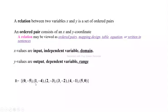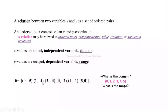Suppose R = {(0,−5),(1,−4),(2,−3),(3,−2),(4,−1),(5,0)}. Then R is a relation between these two sets. The first element is X and the second element is Y and it can be plotted on a graph. For this relation R, the domain is the set of first elements: {0, 1, 2, 3, 4, 5}, and the range is the set of second elements: {−5, −4, −3, −2, −1, 0}.